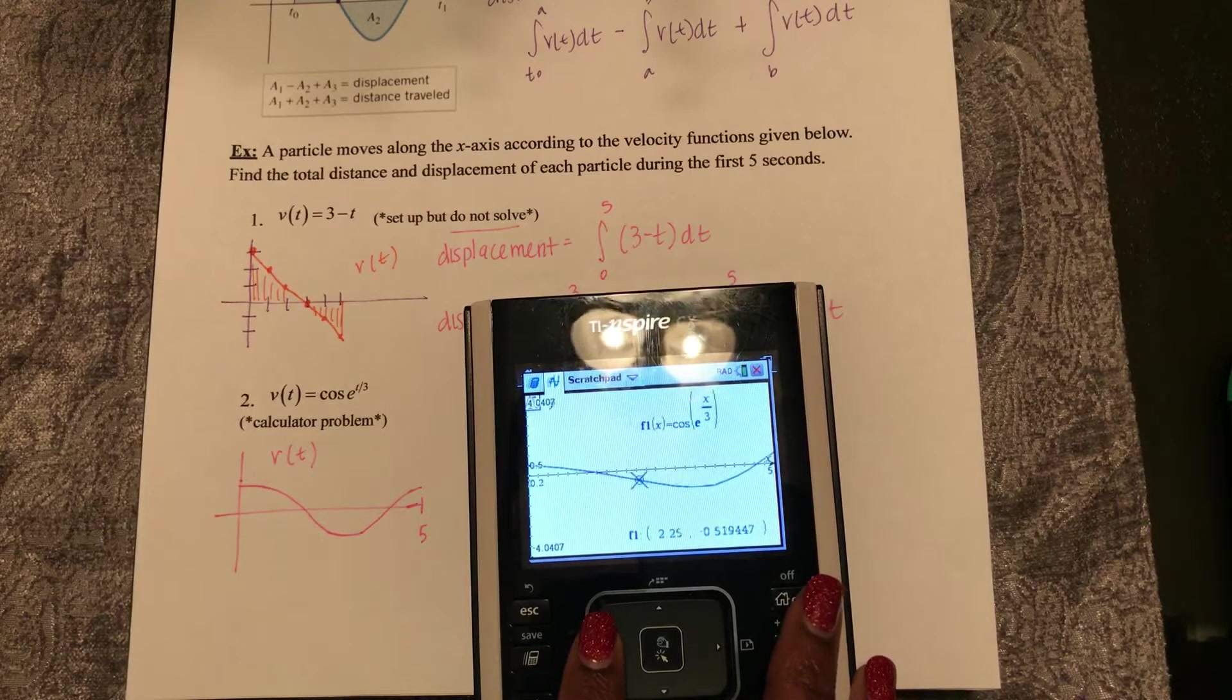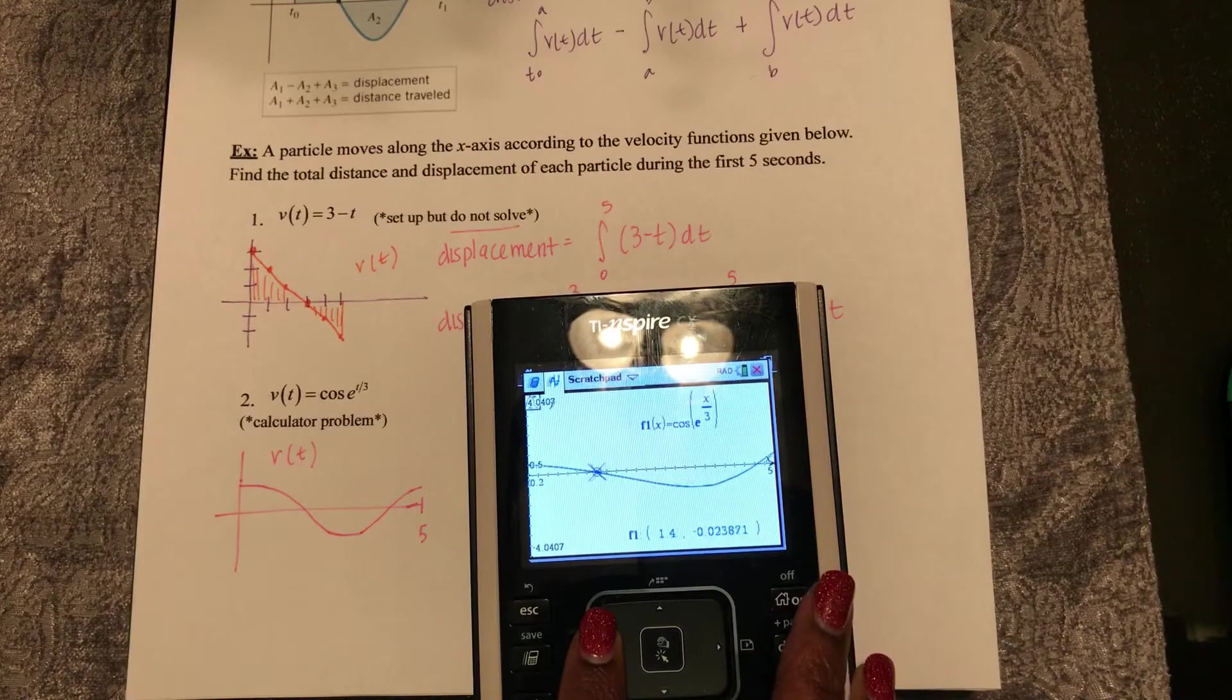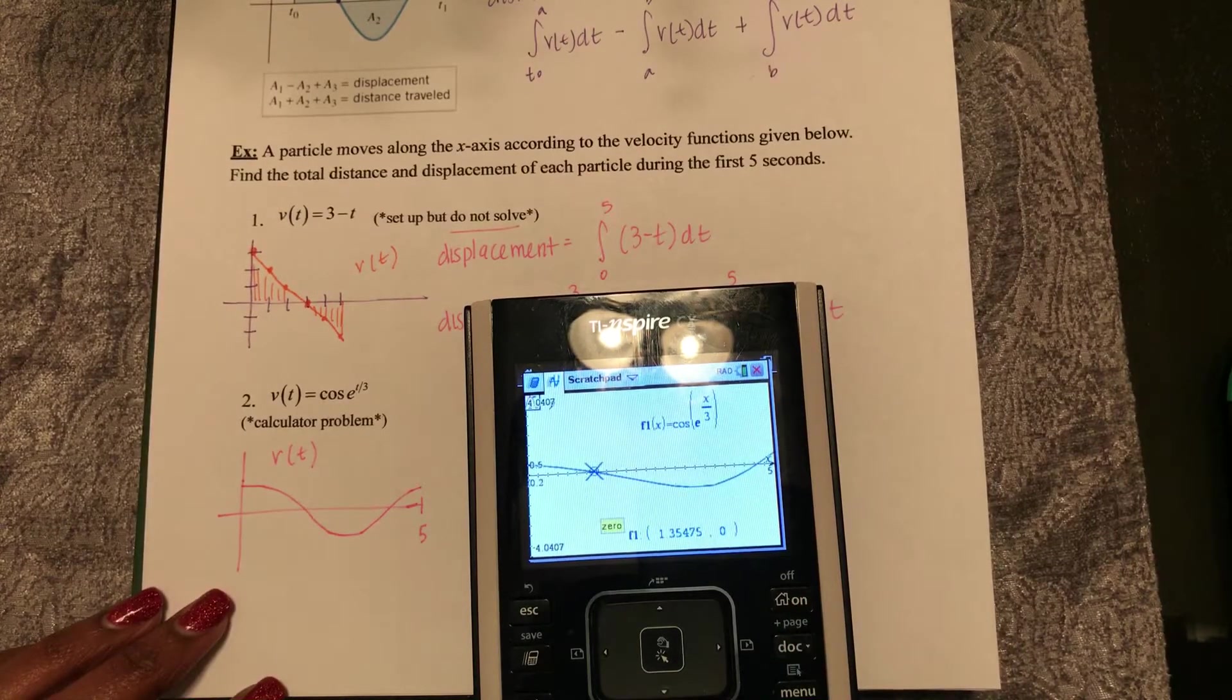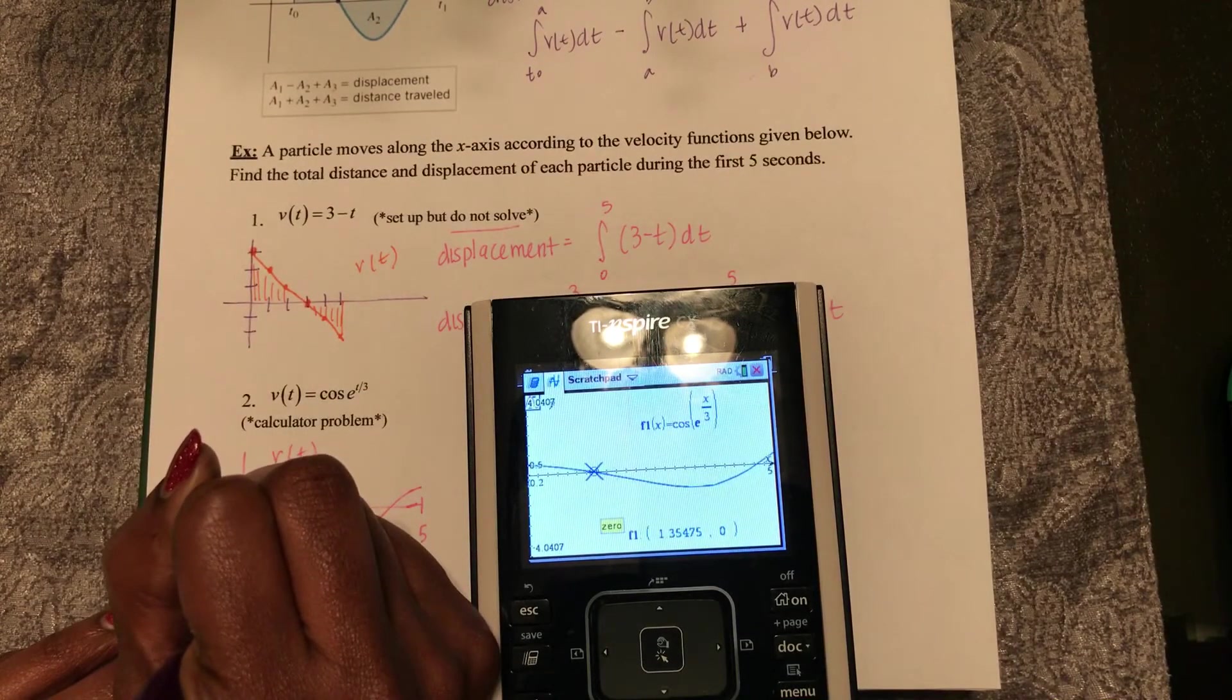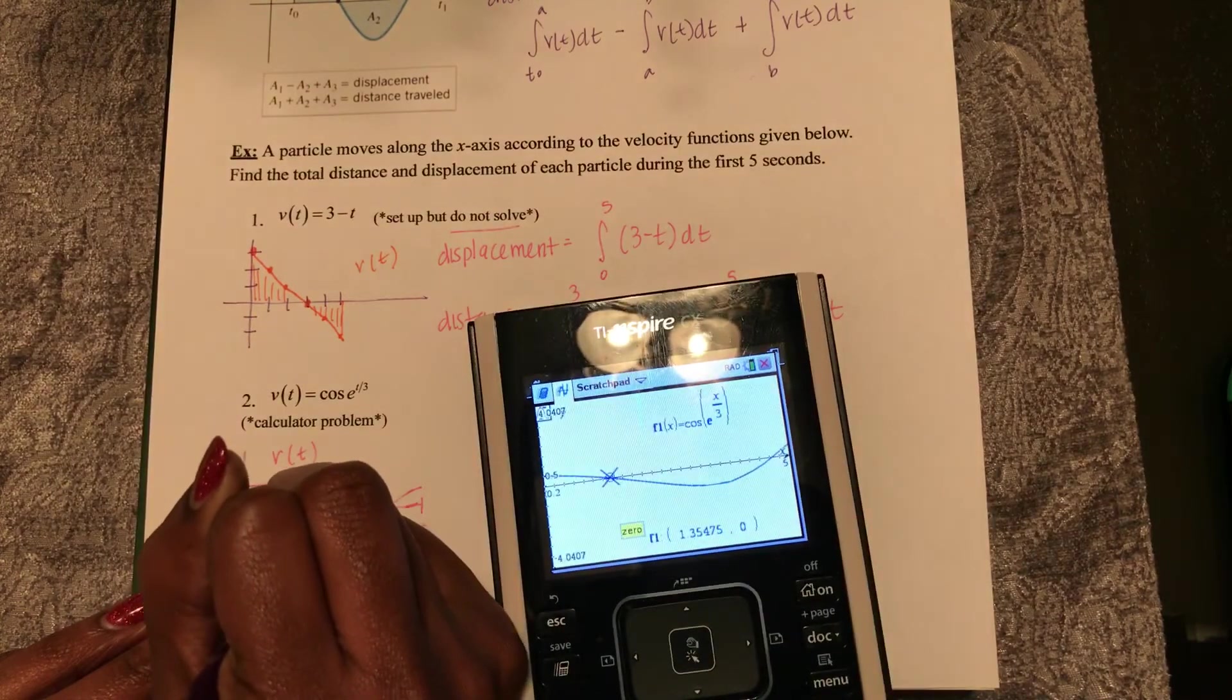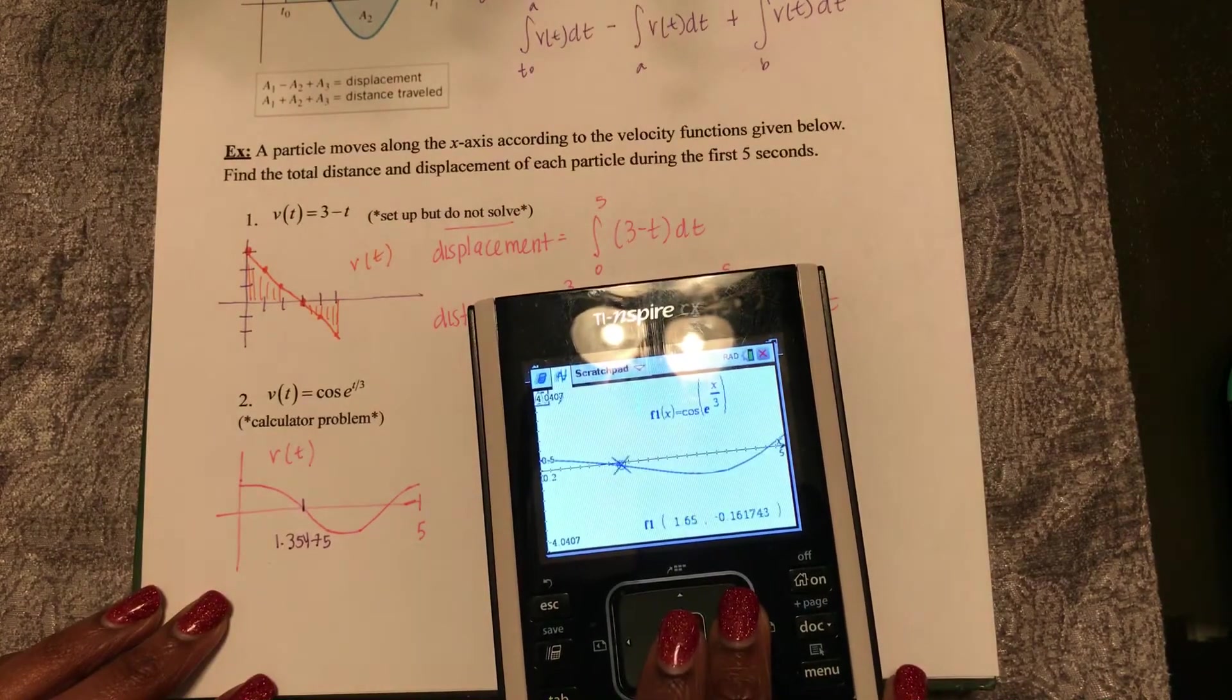I'm trying to find this zero. So I see this zero here, the first one is at 1.35475, and then I'll trace this way to find my other zero.